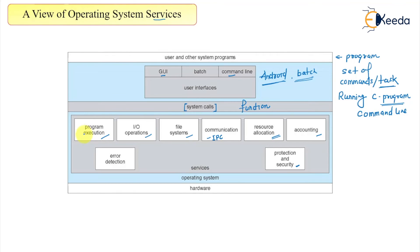So these are the different services summarized here — the operating system services. However, these services are not available directly to the user. They are called by using a function, and that function is called the system call. These are the different services provided by the operating system.